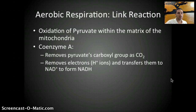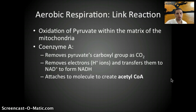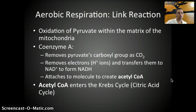Coenzyme A also removes electrons — specifically hydrogen — and transfers them to NAD+ to form NADH. That NADH will be used in the electron transport chain, as we'll see in part three. Coenzyme A then attaches to a molecule to create something called acetyl-CoA, and acetyl-CoA is what enters the Krebs cycle, the citric acid cycle — that's the product needed by the Krebs cycle.